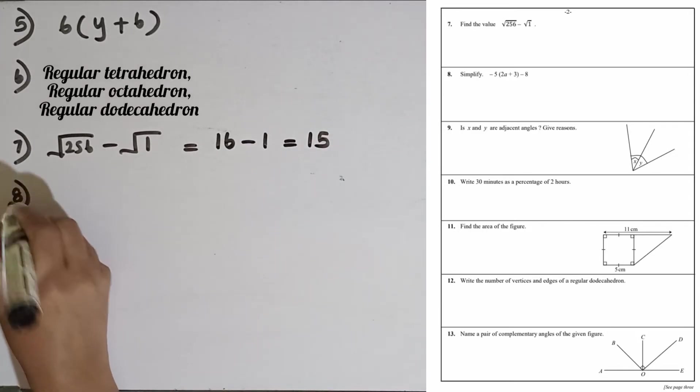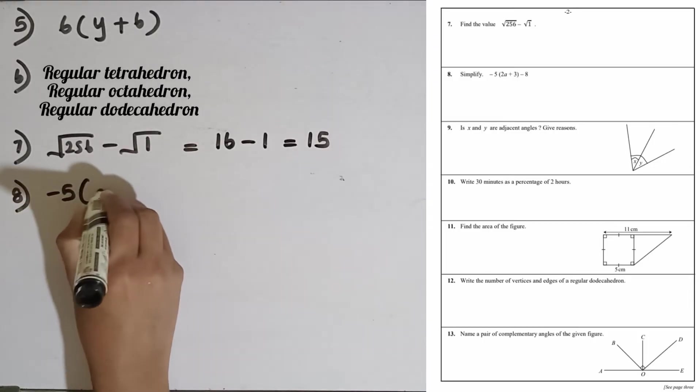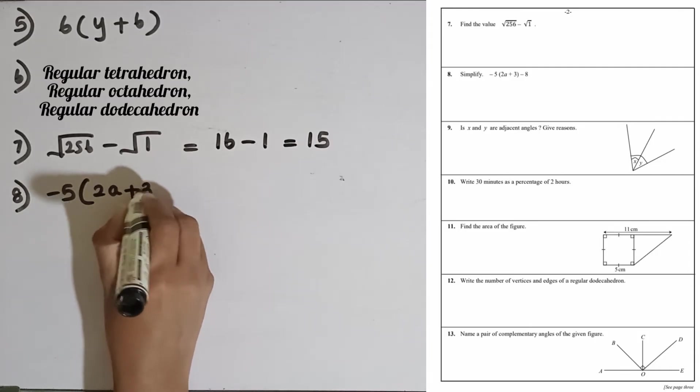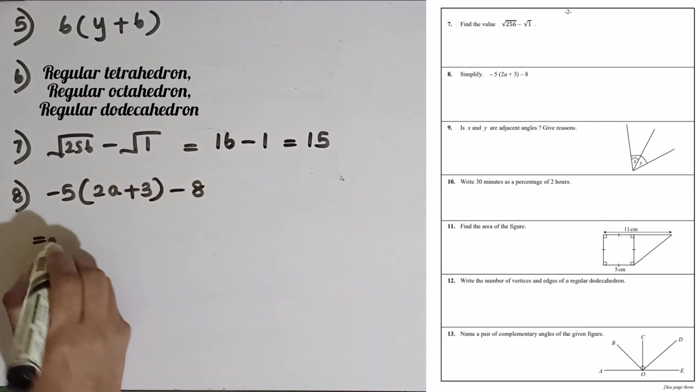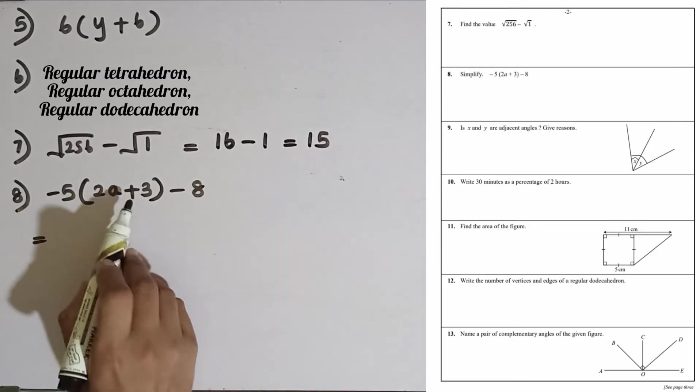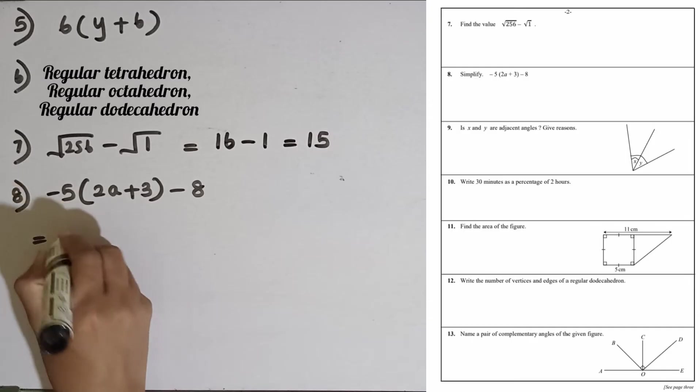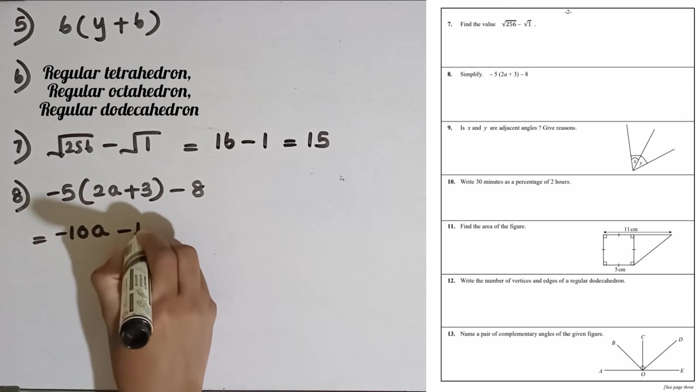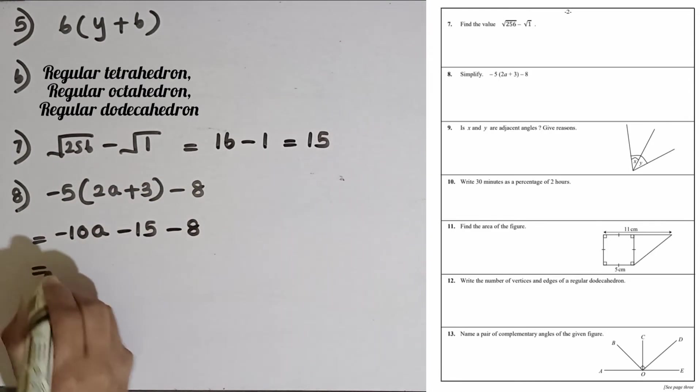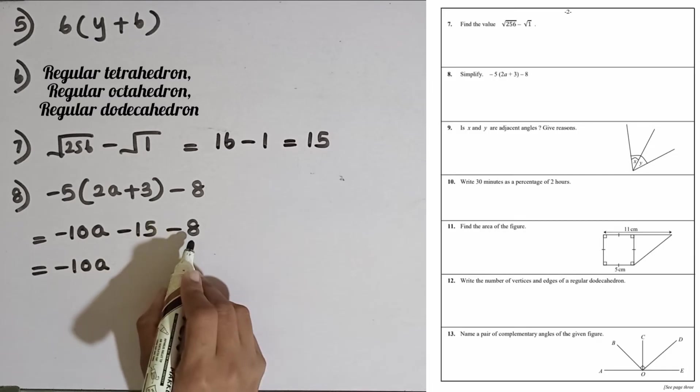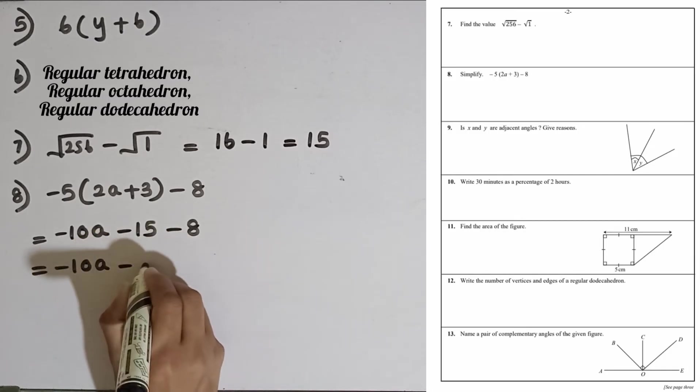Question number 8: We are given this to simplify, minus 5 times 2a plus 3 minus 8. First we have to remove the bracket. We have to multiply the two terms inside the bracket with the number outside the bracket. Minus 5 times 2a, that is minus 10a, then minus 5 times plus 3 is minus 15 minus 8. Then we have to add these two numbers: minus 10a, then minus 15 minus 8 is equal to minus 23.